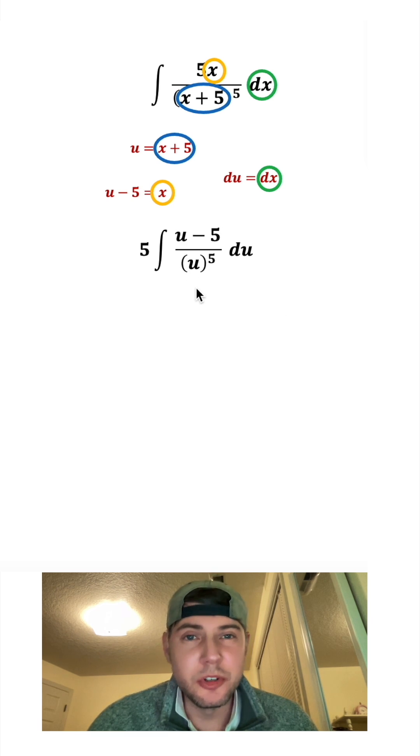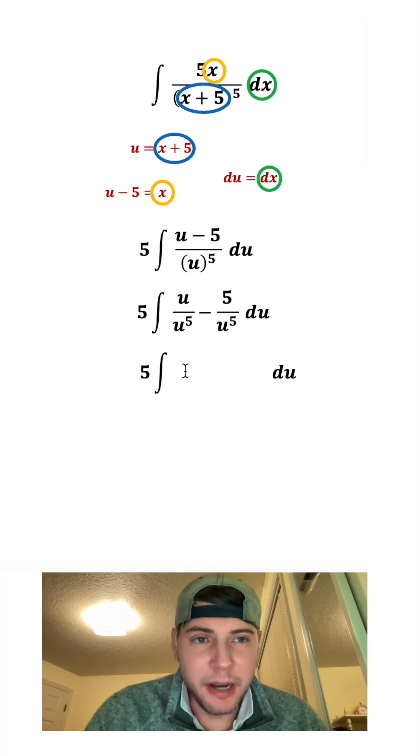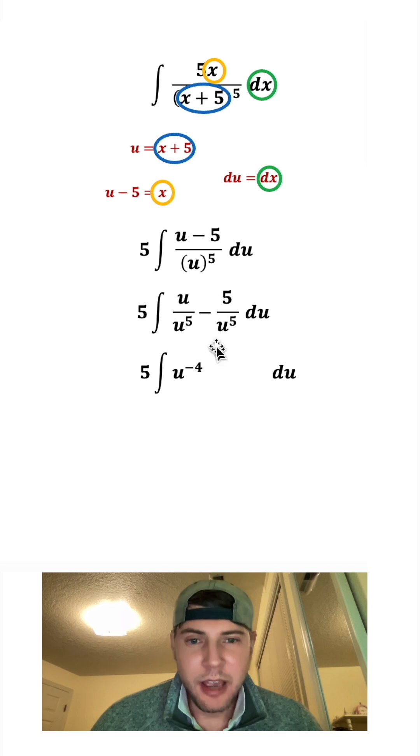Now I want to split this into two separate fractions. So let's copy all this down. This will be u over u to the 5th minus 5 over u to the 5th. So let's copy this down again. u to the 1 minus 5 is u to the negative 4. And then we're going to subtract 5 of u to the negative 5.